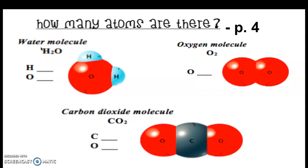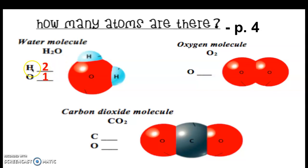In a chemical formula, we're going to have letters and numbers that represent the elements that are present and the amount of those elements present. In this example, we have H, which is hydrogen, and we have O for oxygen. The subscript 2 here — this small number — goes with the element directly in front. So this is showing us we have two H's and then just one oxygen atom. Two hydrogens and one oxygen.